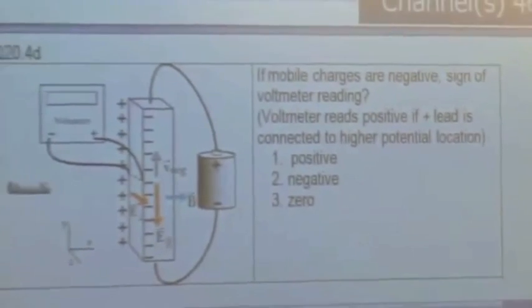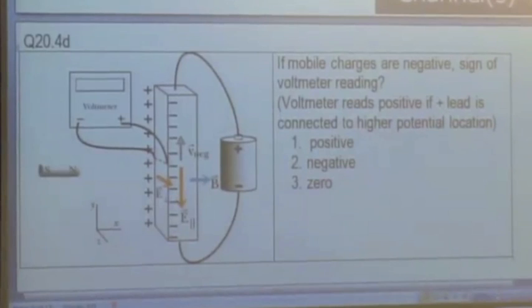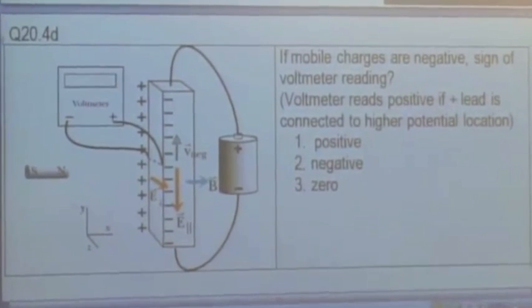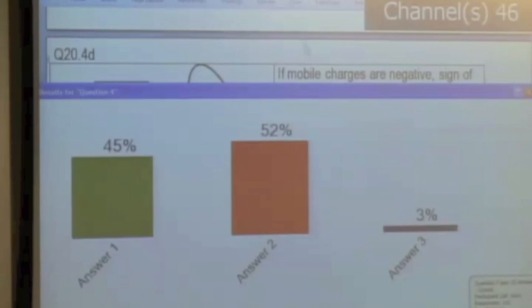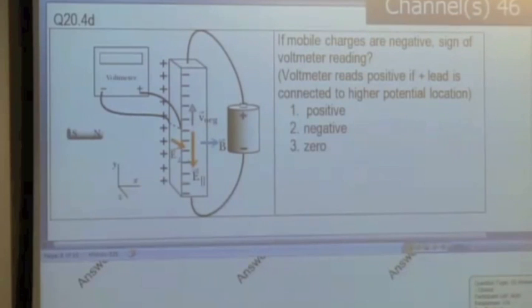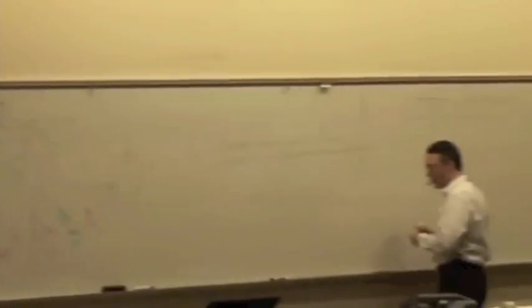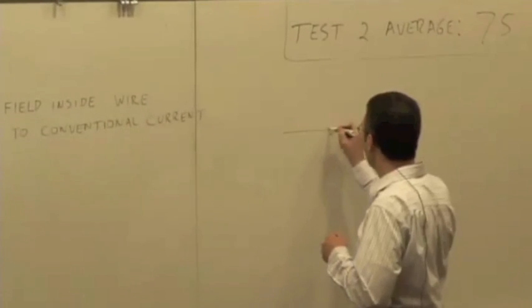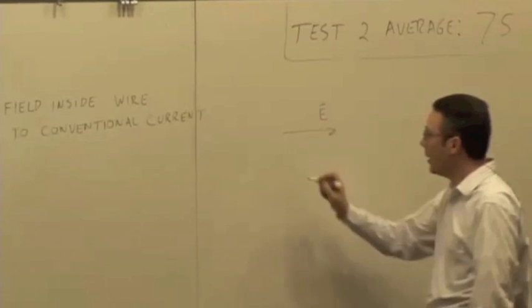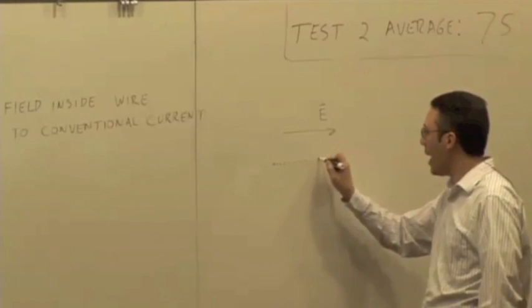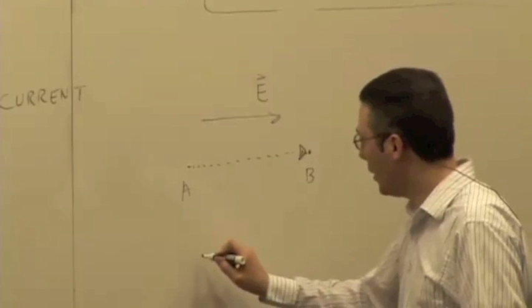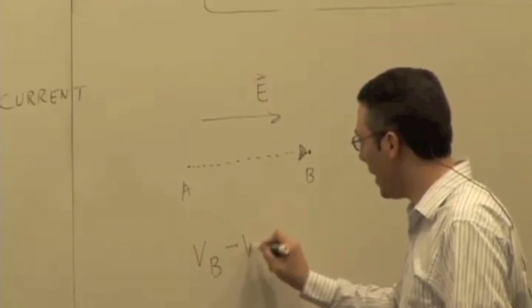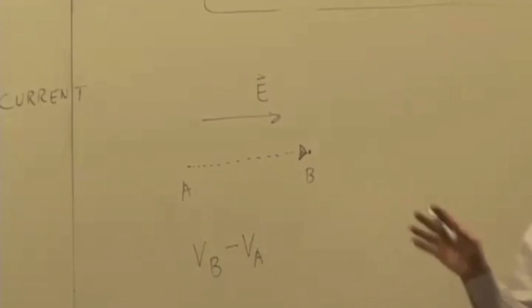What's the sign of the voltmeter reading in this situation? Think about what it means to have a higher potential. What does that mean in terms of the direction of the electric field? What does it mean to have a higher potential? If I have a potential difference, here's the electric field, and I travel a path from A to B in the direction of the electric field, I'm going to find a potential difference VB minus VA. Is that potential difference positive, negative, or zero?